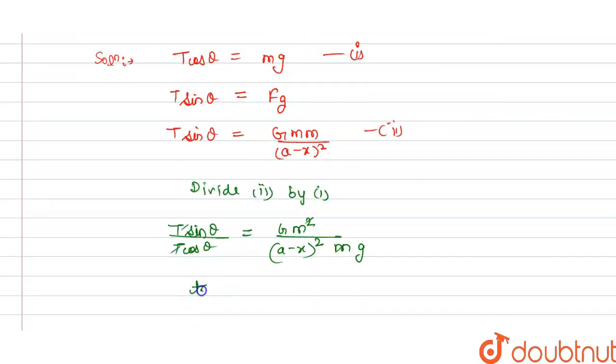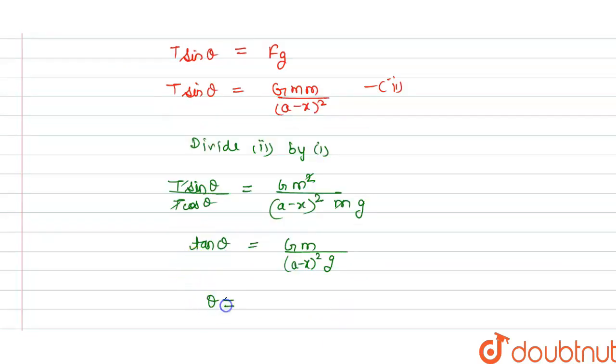We get tan theta equals Gm divided by (a-x)² multiplied by g. From this we get theta equals tan inverse of [Gm/(a-x)²g]. And this is the answer for the question.